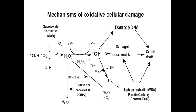How can free radicals be created inside our body? Free radicals are created via radiation exposure, phase 1 drug metabolism, redox reactions, nitric oxide, transition metals, and leukocyte oxidative burst.